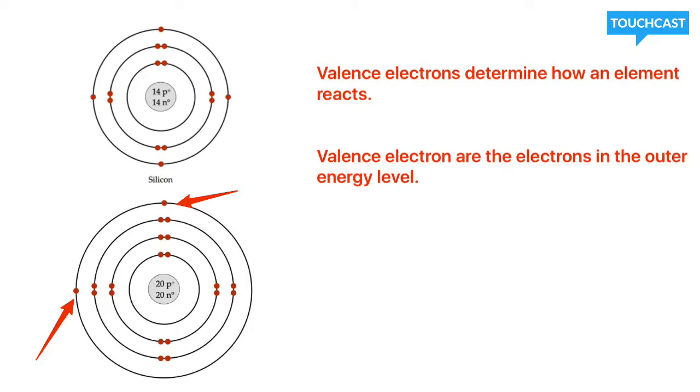So, calcium only has two valence electrons. If you look over there, silicon has four. Basically, valence electrons determine how an element reacts because they're on the outside layer. They're going to be the first one to make contact with another element.